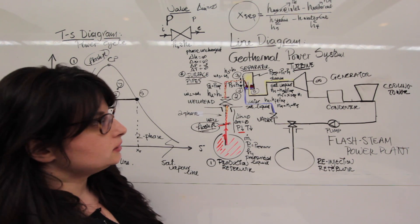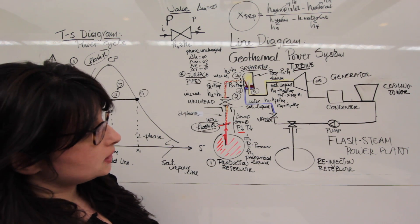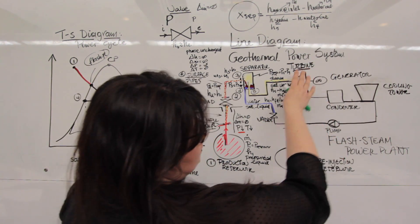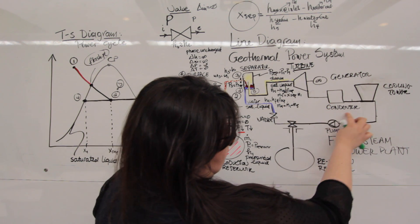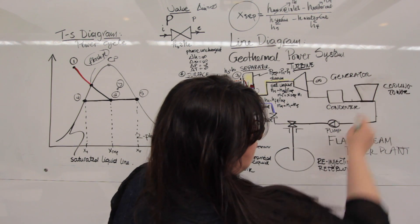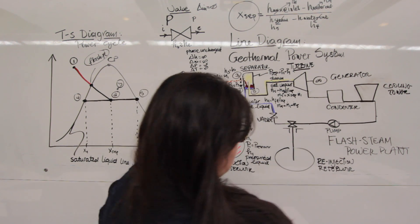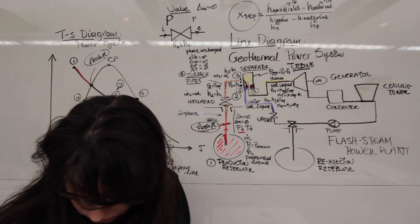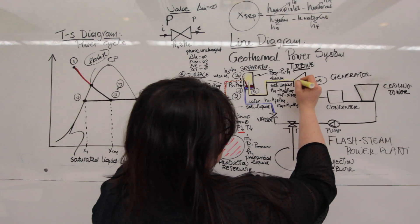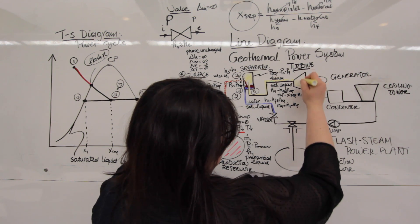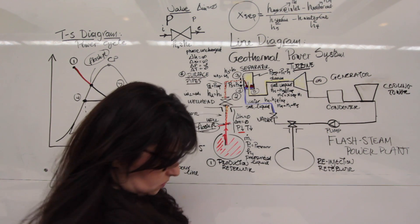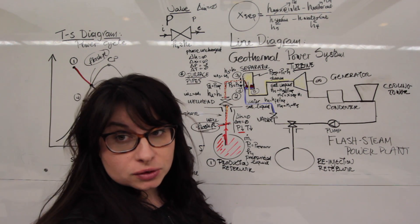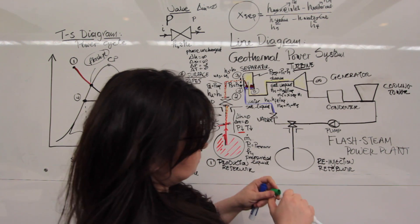Now let's move on and take a look at what happens in the turbine. We're going to look at the part of the system that contains the turbine, and that exits the condenser, generator, and the cooling tower. We have saturated steam coming into the turbine, flowing through. This particular turbine is not open to the atmosphere, so it's a system that's sealed.